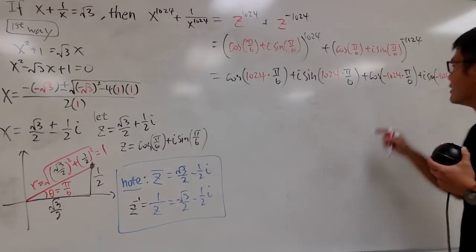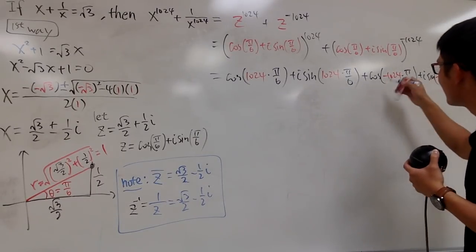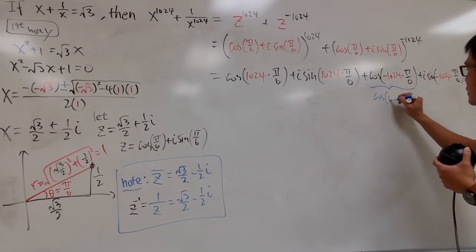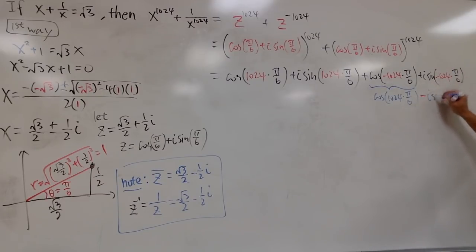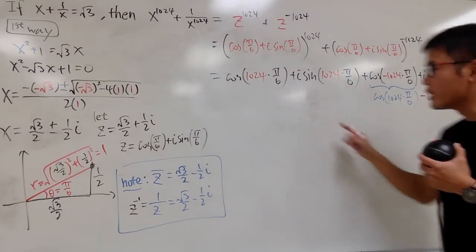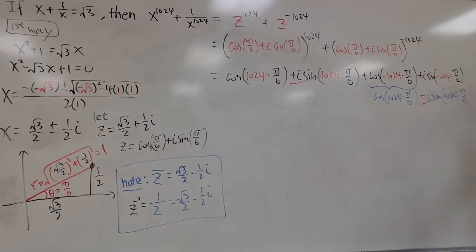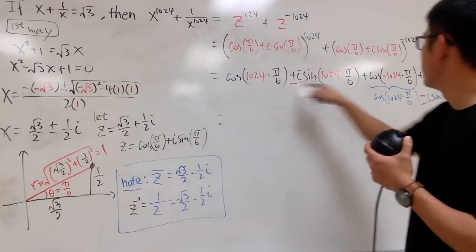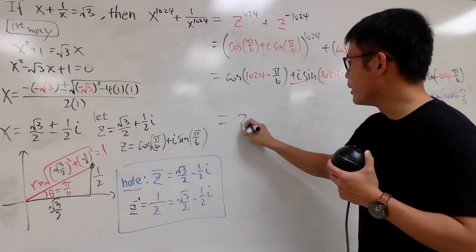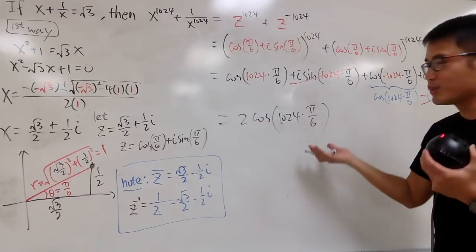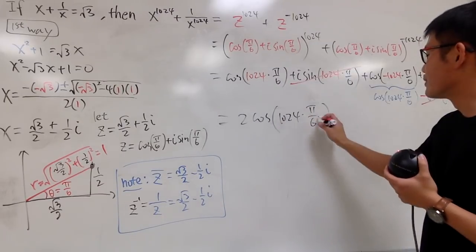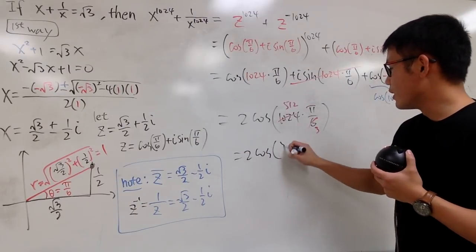Cosine is an even function, so the negative angle version equals the positive version. Sine is an odd function, so the sine terms cancel — the positive and negative versions add up to zero. The two cosine terms add up, giving us 2 times cosine(1024·π/6). Simplifying: 1024/6 reduces to 512/3, so this is 2 times cosine(512π/3).